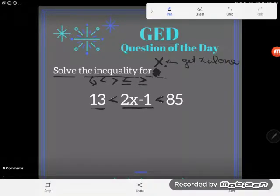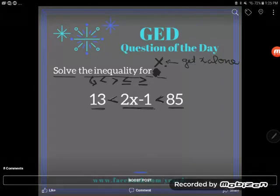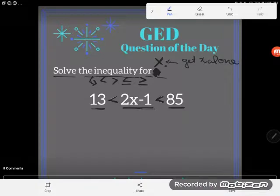Then I have the expression 2X minus 1, and then another inequality. So 2X minus 1 is the second expression. And then I have another number 85, and that's all by itself after an inequality symbol. So that's another expression.